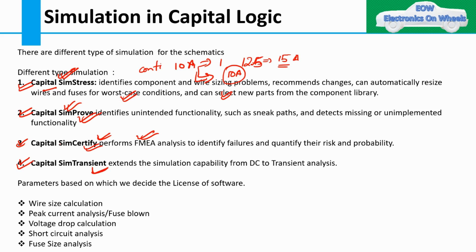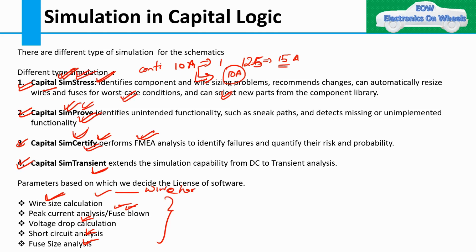Not every license can be used together, as each license has a particular fee. So based on the need or requirement, OEMs select accordingly. For wiring harness parameters such as wire size calculation, peak current analysis, fuse-blown analysis, voltage drop calculation, short circuit analysis, and fuse size analysis — based on these parameters, most OEMs use Capital Sim Stress, though they can also go with Capital Sim Certify and Capital Sim Prove.